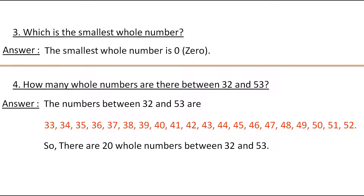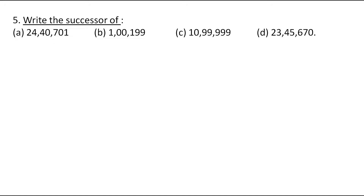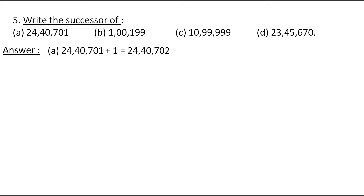Now let's move to the fifth question: Write the successor of the following numbers. In my last video, I explained in detail about successor and predecessor — these two terms are very easy, but many students get confused. You can go through that video; the link is in the description. To find the successor, we add 1 to the given number. So, 24,40,701 + 1 = 24,40,702. Therefore, the successor of 24,40,701 is 24,40,702.